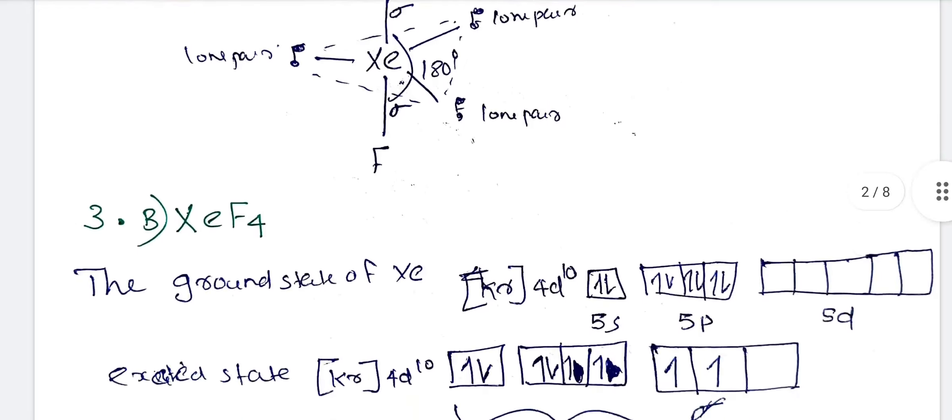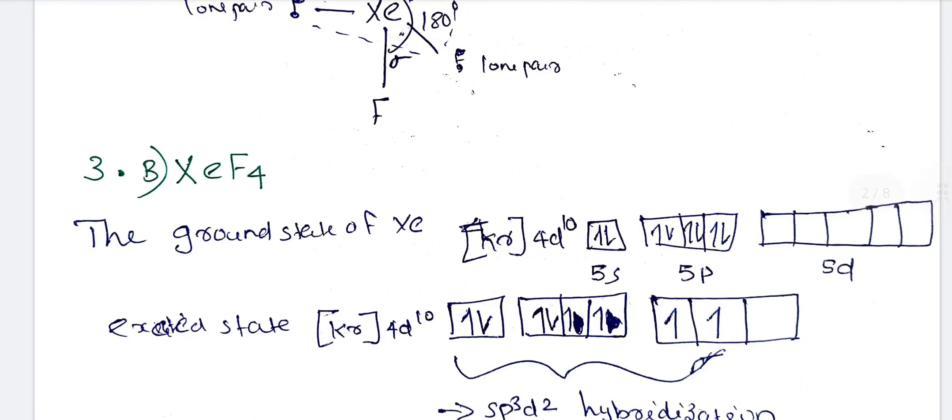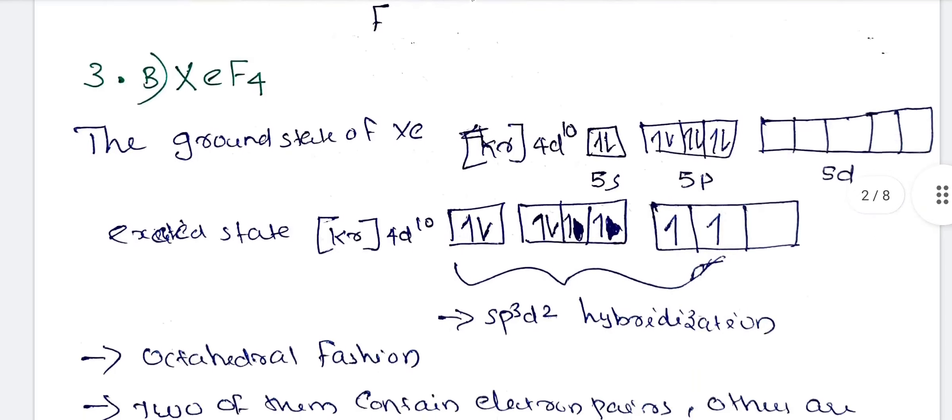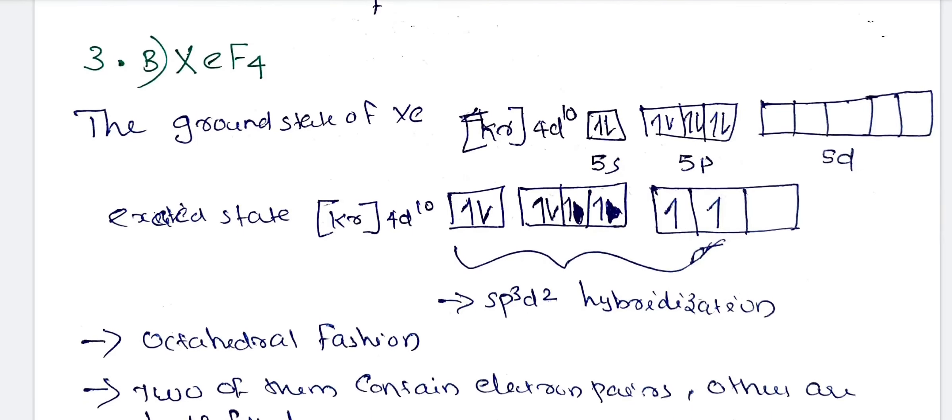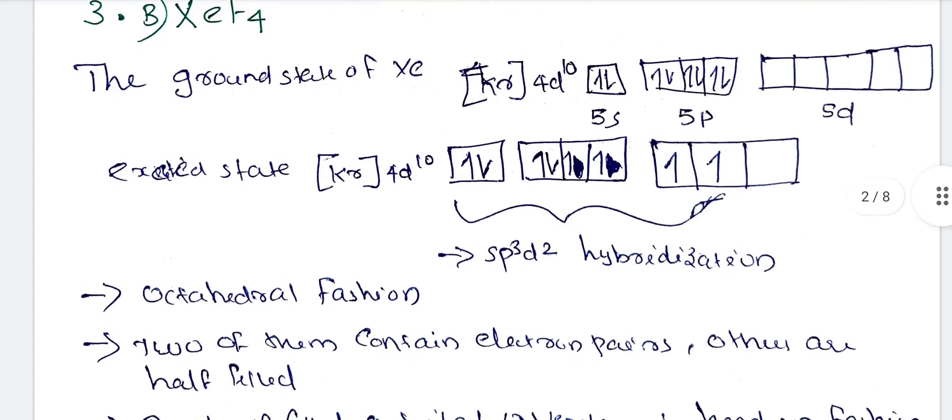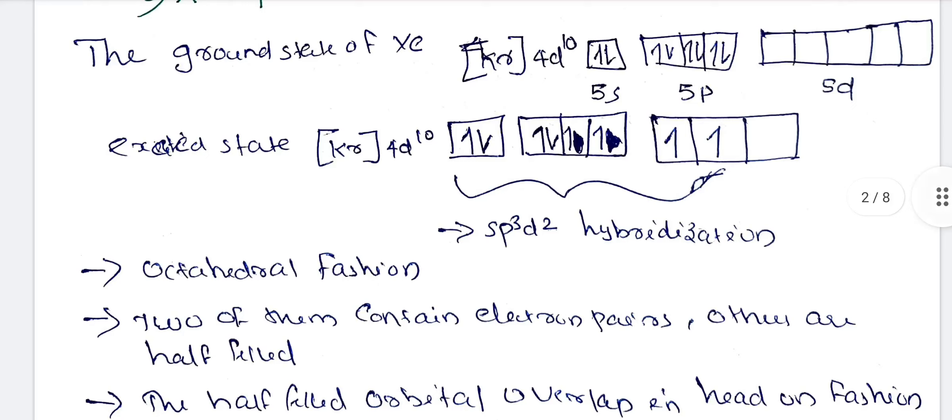The next one is Xenon tetrafluoride. We are discussing Xenon tetrafluoride now. Xenon ground state is [Kr]4d10 5s2 5p6. The ground state gets excited.